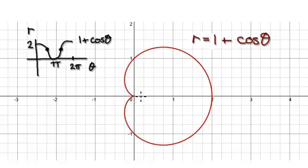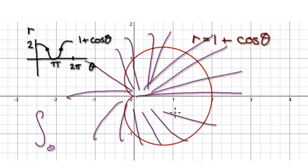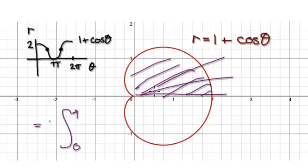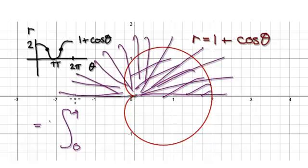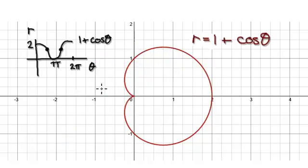To do this we have two options. We can integrate from 0 all the way to 2 pi, or we can use symmetry — just work out half from 0 to pi, because by the time we get to pi the radius will be 0. We can work out from here to here, and then multiply it by 2. Both methods lead to the same answer.